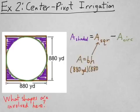So how can I find the areas of those two things? For the square, the area is base times height, so that would be 880 yards times another 880 yards, which gives me 774,400 square yards. Gosh, that's a lot of square yards.